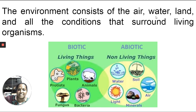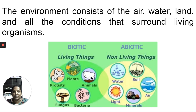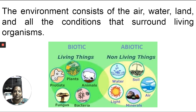Our environment consists of two important components: biotic and abiotic factors. Biotic factors are the living organisms present, ranging from microorganisms to the most highly evolved species — human beings. These form the biotic component. Abiotic factors are the non-living things: temperature, humidity, soil, water, and minerals. Each one is dependent on the other — for example, we depend on water for survival and on oxygen in the air for respiration.